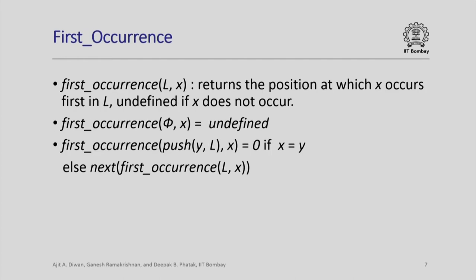Let us look at another function called first_occurrence(l, x), which returns the position at which x occurs in the list l for the first time, and is undefined if x does not occur in l at all. first_occurrence(empty, x) is undefined. first_occurrence(push(y, l), x) is 0 if x equals y — if the first element of the list is x, the position is 0. Otherwise, we find the first occurrence of x in l and return next of that position, so the position will be one more than the position of x in l.